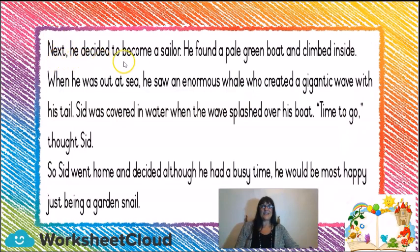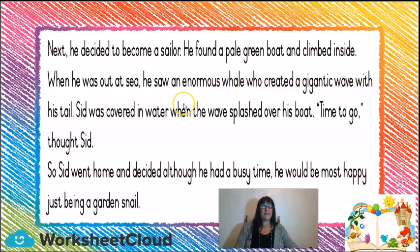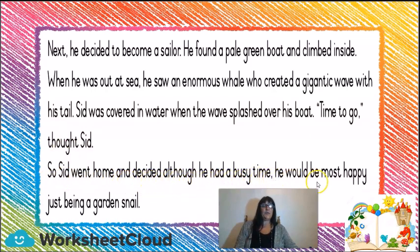Next, he decided to become a sailor. He found a pale green boat and climbed inside. When he was out at sea, he saw an enormous whale who created a gigantic wave with his tail. Sid was covered in water when the waves splashed over his boat. 'Time to go,' thought Sid. So Sid went home and decided that, although he had a busy time, he would be most happy just being a garden snail. So he decided he wanted to be a garden snail after all.